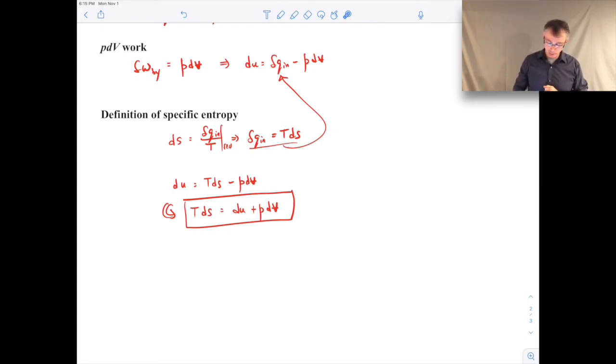Now, when you look at this, one thing I just want to highlight is, well, you know, actually, let me save this for just a moment. Let's go ahead and go a little bit further. The next thing that we'll do is we're going to rewrite this Tds equation in terms of the specific enthalpy. Remember that specific enthalpy, let me write it this way, H is equal to U plus PV.